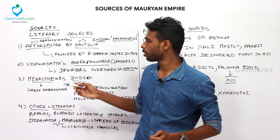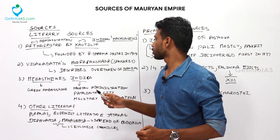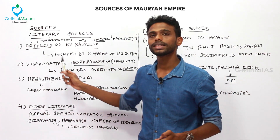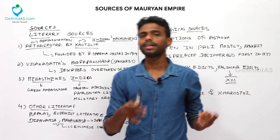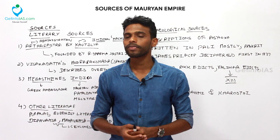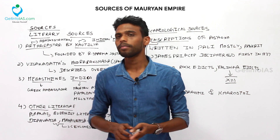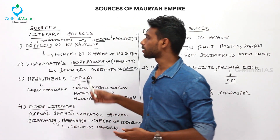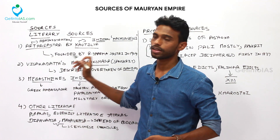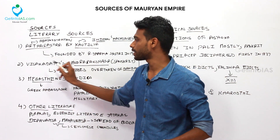The second literary source was Mudra Rakshasa, written by Visagadatta, also written in Sanskrit. It describes the overthrow of the Nandas — Dhanananda, the last ruler of Nanda, was overthrown by Chandragupta Maurya and Kautilya. That war against the Nandas was described by Visagadatta in the book Mudra Rakshasa.